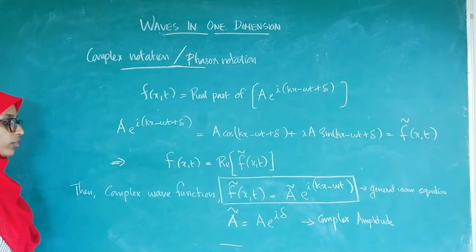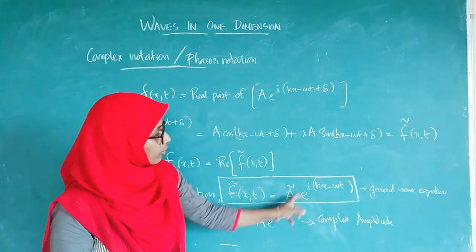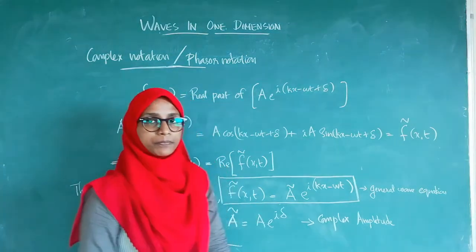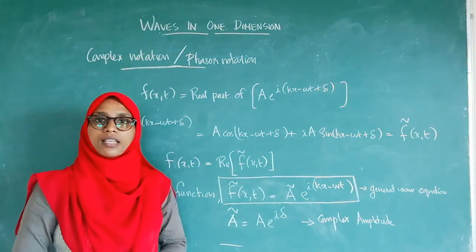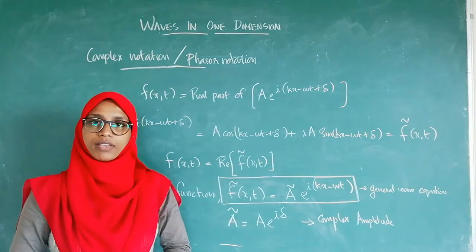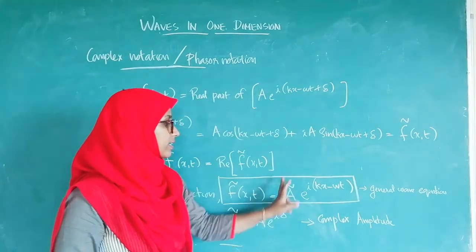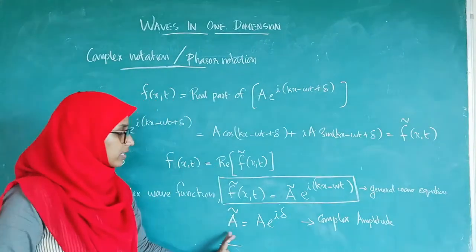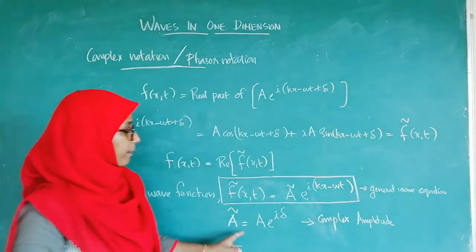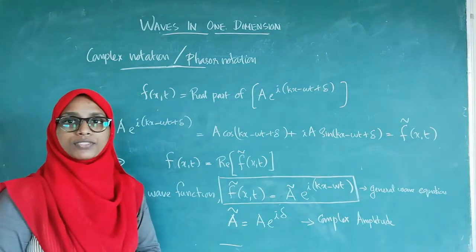The complex wave function f(x, t) can be written as a complex amplitude Ã multiplied by e^(i(kx − ωt)). This general wave equation has its real part representing the actual physical wave. Here, Ã is known as the complex amplitude, defined as Ã = A e^(iδ), which includes both the amplitude and the phase dependence of the wave.